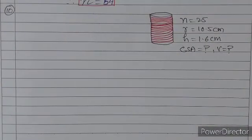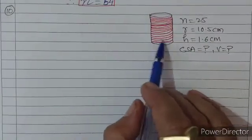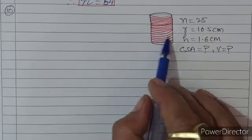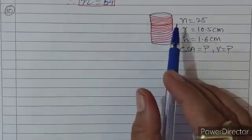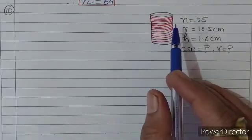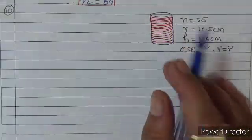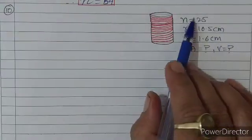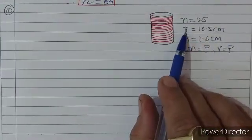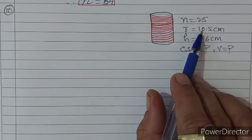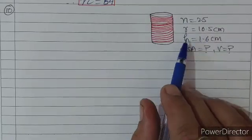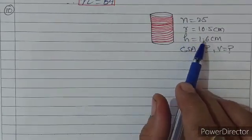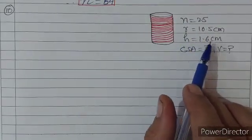एक plate के ऊपर एक plate, उसके ऊपर एक plate — इस तरह 25 plates एक के ऊपर रखी हैं तो cylinder जैसी shape तैयार हो गई। Number of plates = 25, एक plate की radius = 10.5 cm, एक plate की thickness (height) = 1.6 cm।